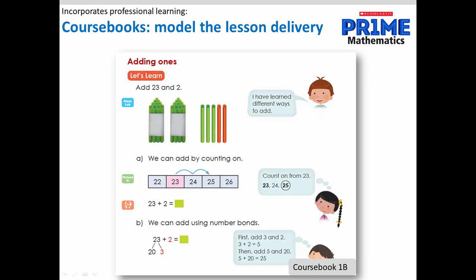The course books are the key teaching resource in Prime. They provide carefully sequenced and structured modelled lessons. In this example for learning to add, the Math Lab icon and the image of straws is an indicator for teachers to use everyday materials such as straws or sticks for hands-on experiences of addition. Then the Picture It icon indicates that there needs to be a link made between the hands-on and the pictorial representation of counting on. And finally, the hands-on and pictorial representations are related to the abstract through the use of the number sentence and number bonds.